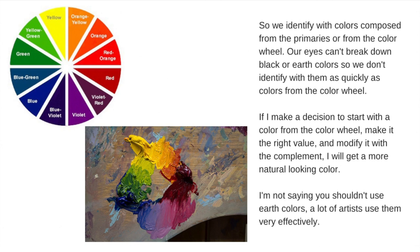If I make a decision to start with a color from the color wheel, then make it the right value — how dark or light it is — and then modify it with a complement, I'll get a more natural looking color. My steps in mixing: I look at a shape or plane, decide what color from the color wheel best represents it, make it the right value, then modify it by adding a little complement to gray it down. I don't always want a strong color — I keep stronger color in reserve.